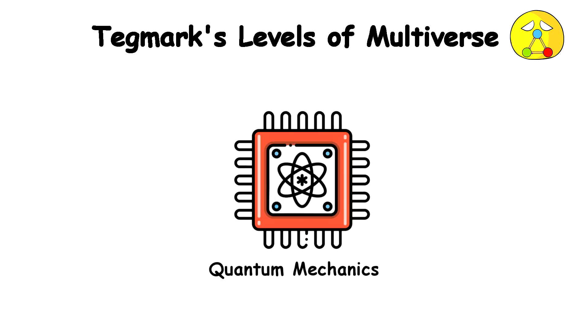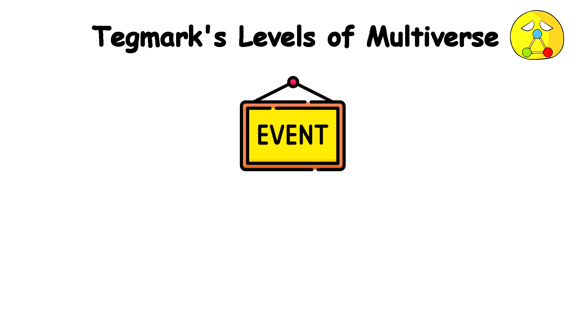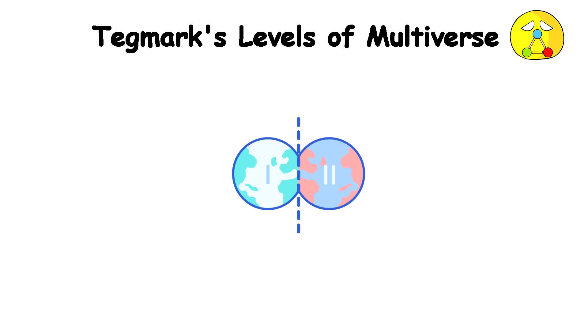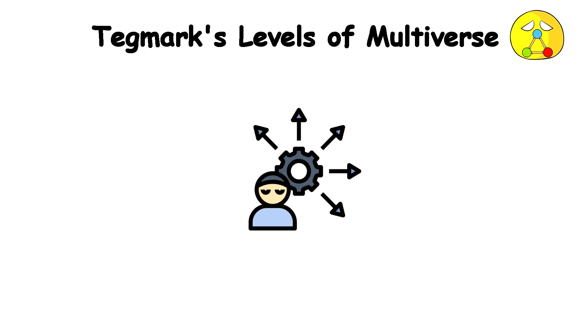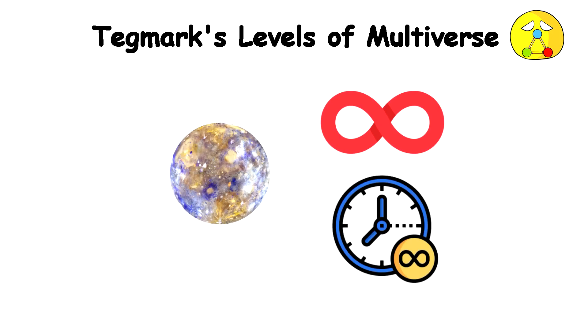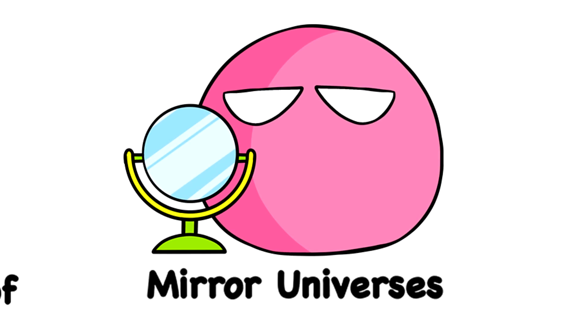Level 3 comes from Quantum Mechanics, which says that events cause reality to branch into multiple alternate histories and futures. It's similar to the parallel worlds in sci-fi. Every possible outcome exists in some parallel world. Level 4: All fictional worlds would be real in this endless, limitless multiverse.